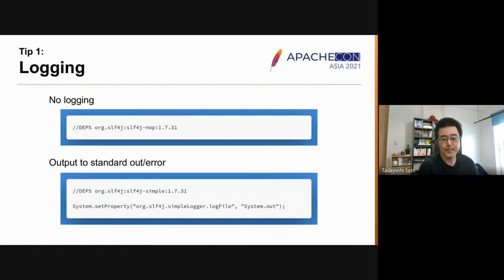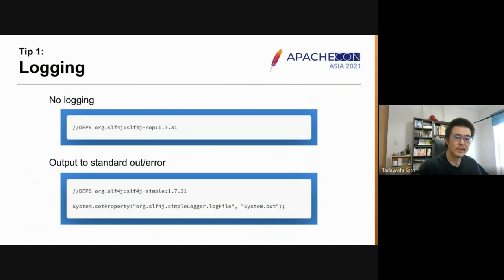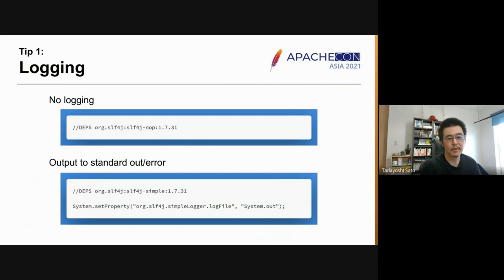Tip one: logging. When you start scripting with JBang, the first thing you want to know should be how to control logging. The easiest solution is to just turn it off. Most of the time, it doesn't make sense to output detailed logging for scripting.